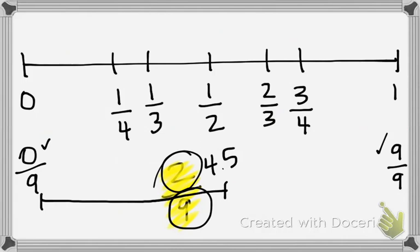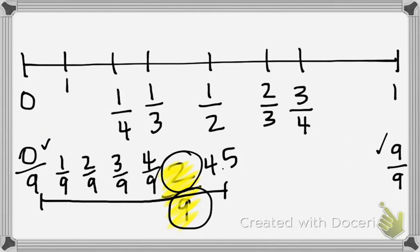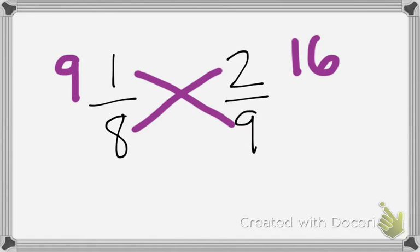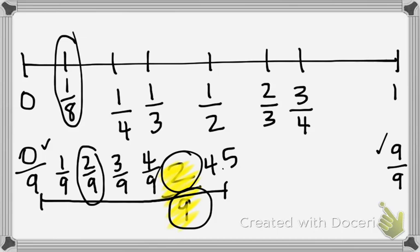I know I need to fit 0-ninths, 1-ninth, 2-ninths, 3-ninths, and 4-ninths in that left half. It's going to be maybe less than 1-fourth, but I also know 1-eighth is in there since it's half of 1-fourth. So I'm going to compare 2-ninths to 1-eighth using cross-multiplication: 1 times 9 is 9, and 8 times 2 is 16. So 2-ninths is bigger than 1-eighth, and I can place 2-ninths right in there on my number line.